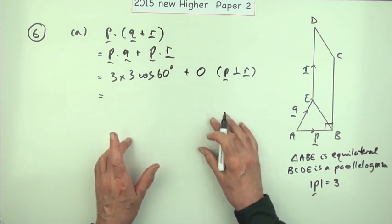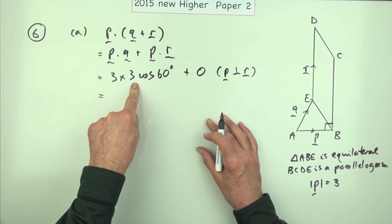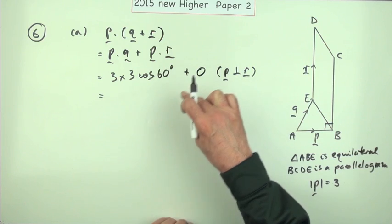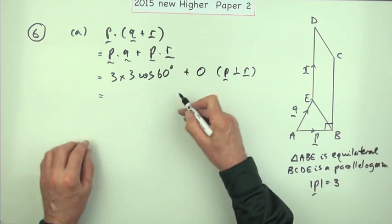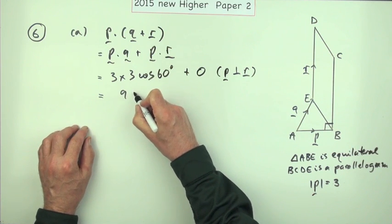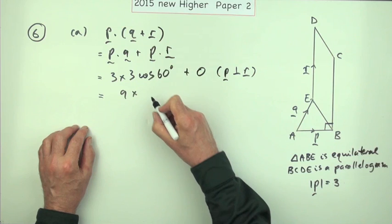Now you think that would have been the first mark but it's not, because the first mark comes from evaluating this and then adding the zero onto a final answer. So it's 9 times, now the cosine of 60 is a half.